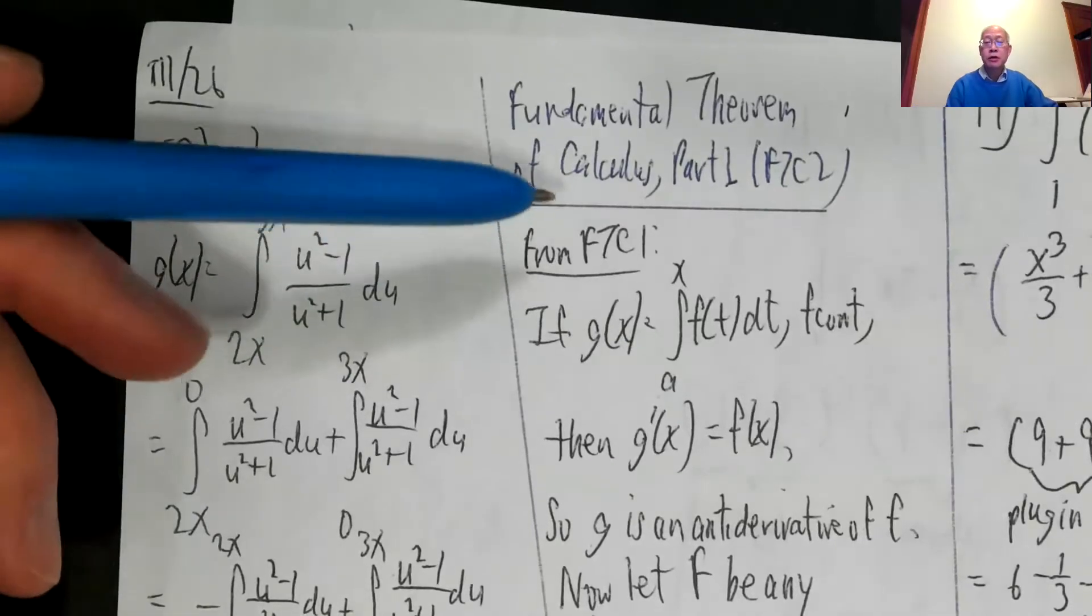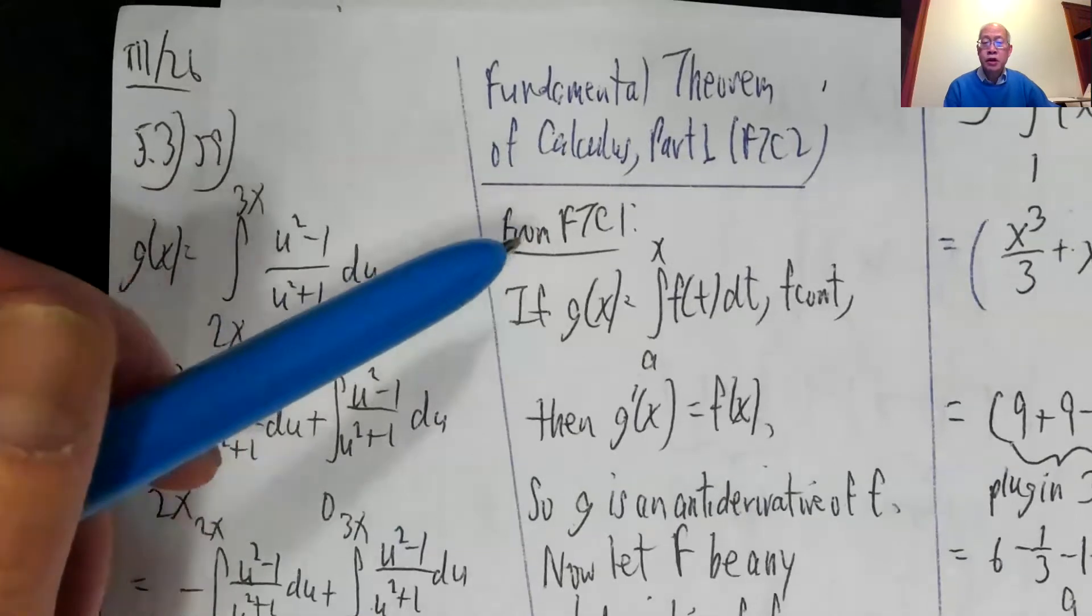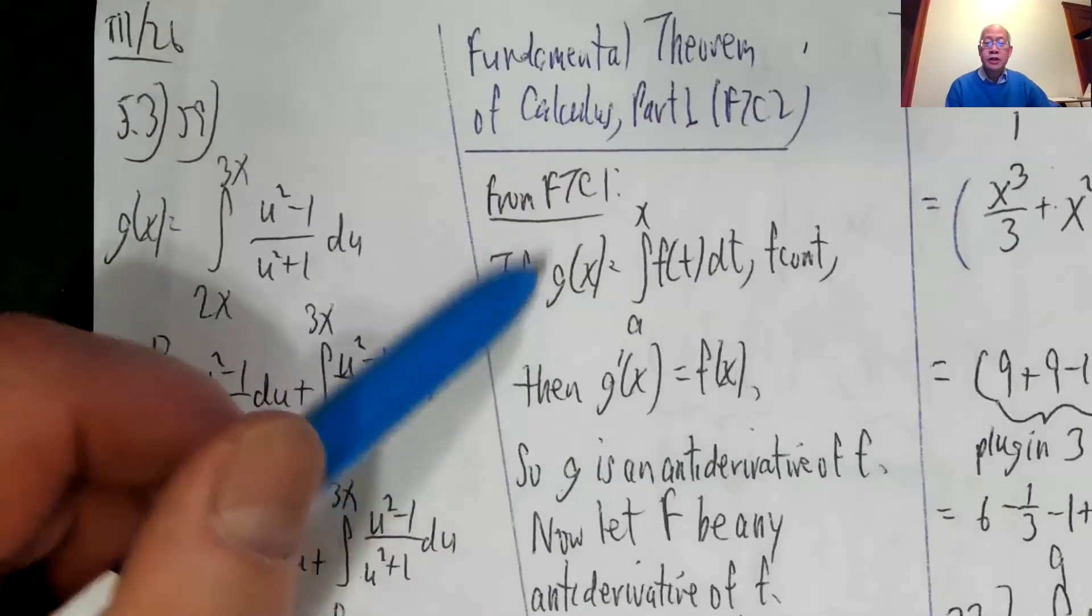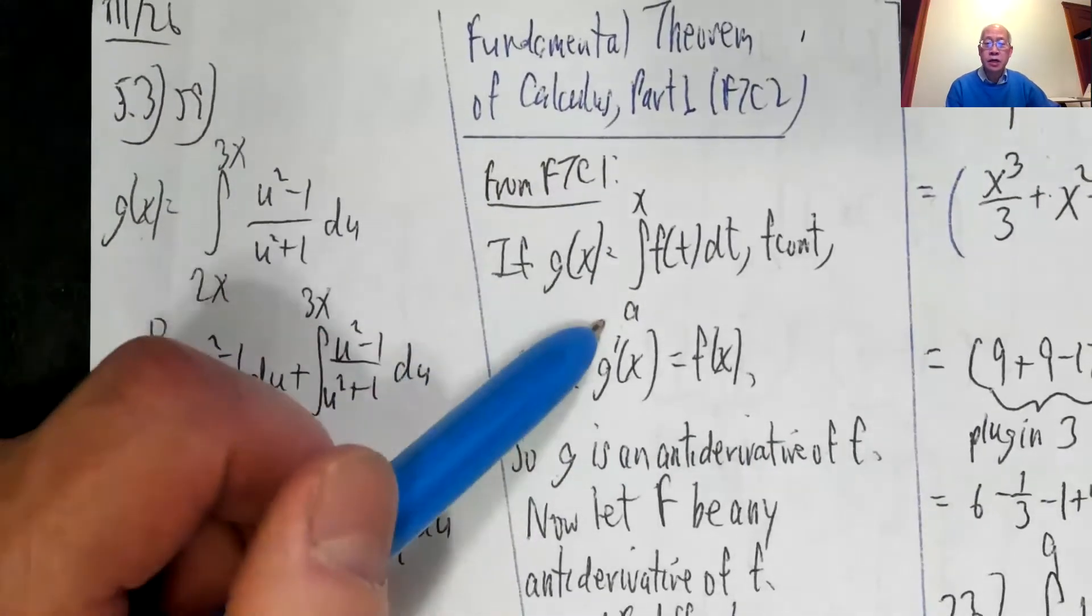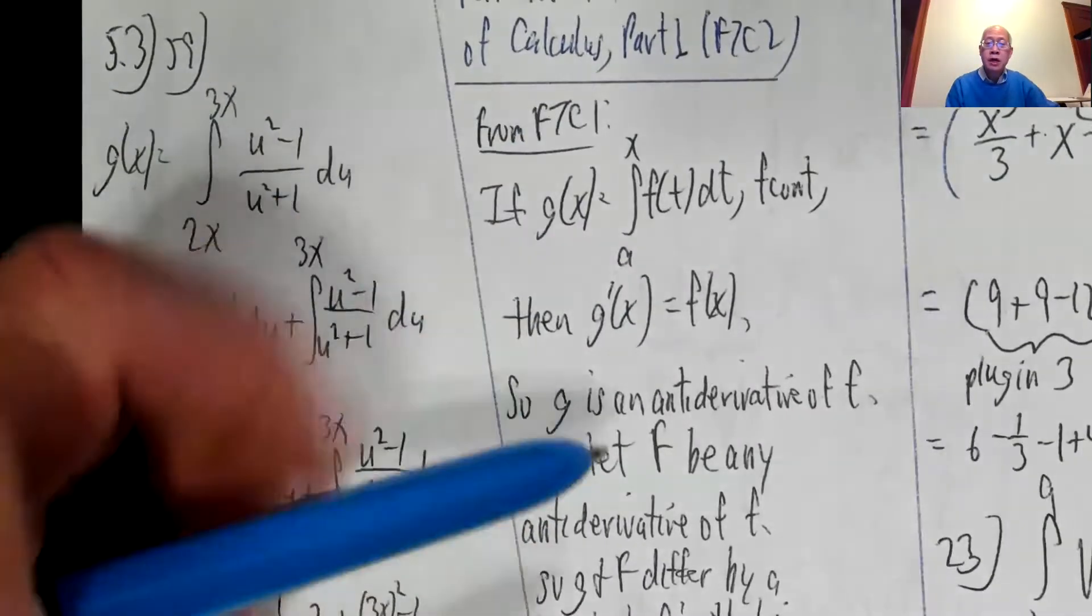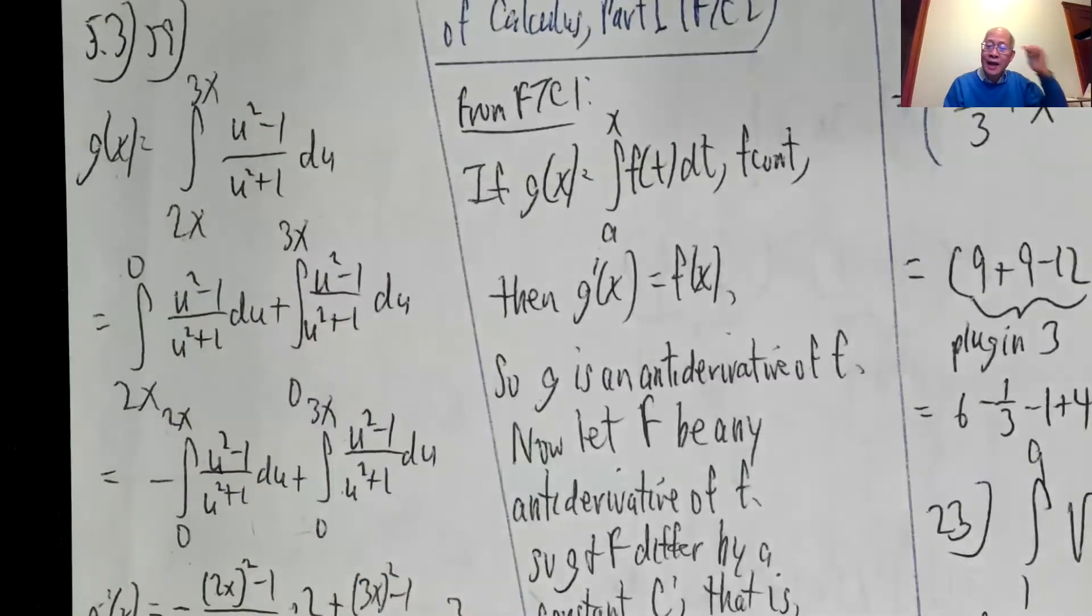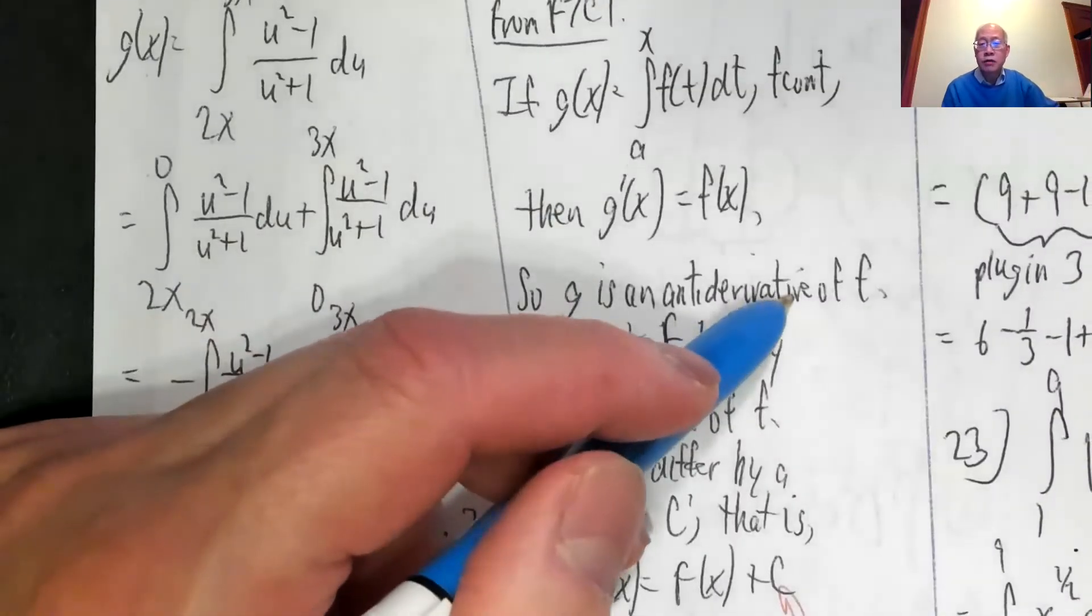So fundamental theorem of calculus part 2, FTC2. From FTC1, if g of x is defined to be the integral from a to x of f of t dt, where f is continuous, then g prime of x is equal to f of x. So that means g is an antiderivative of little f.